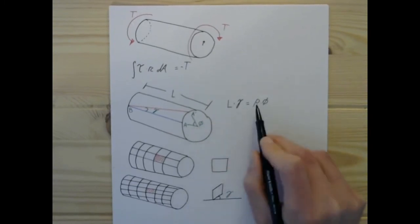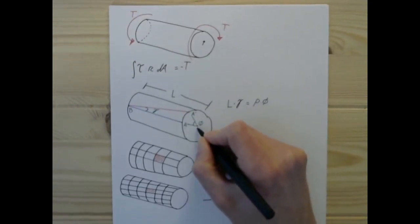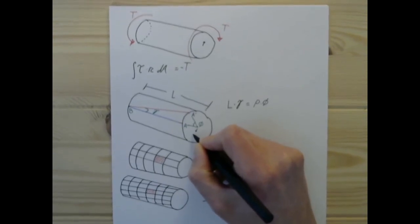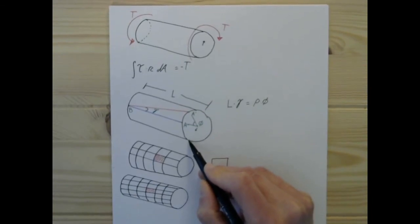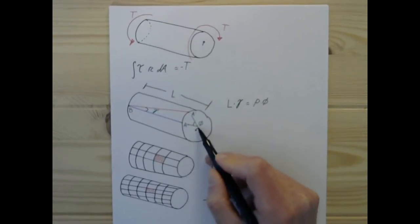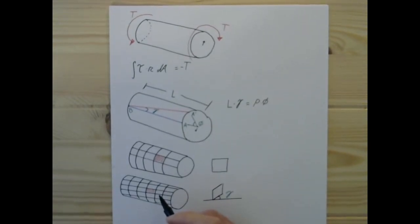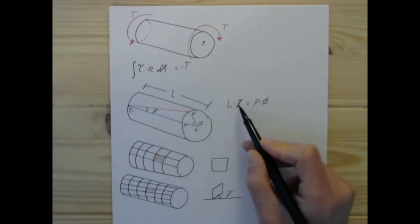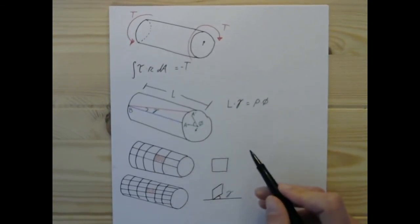So you'll notice right away that this is a function of rho. So it's going to be large out here for a large radius, and it's going to be small, going all the way to zero at the centroid. So that's important, because that means that our shear strain is going to be a linear function of how far we are from the center of the bar experiencing torsion.